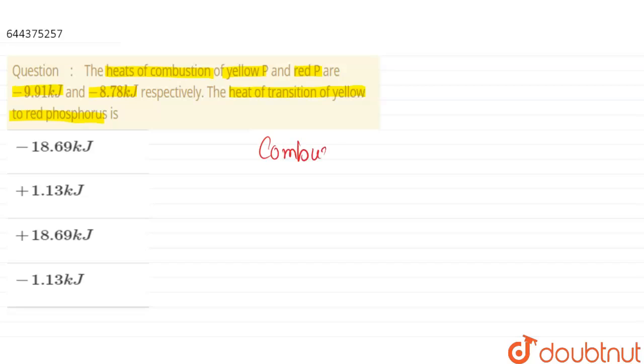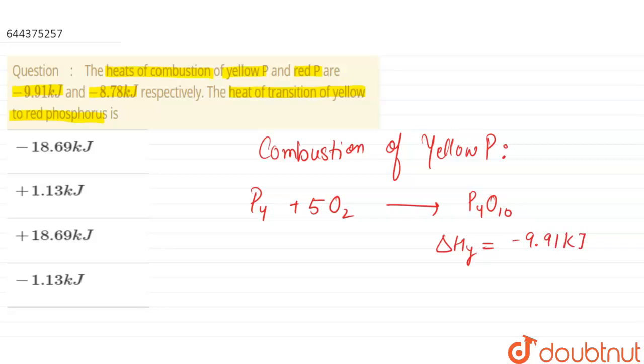Combustion of yellow phosphorus: P4 plus 5O2 gives P4O10. So the heat of combustion of yellow phosphorus is minus 9.91 kilojoules.